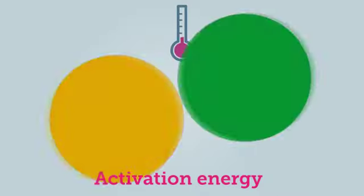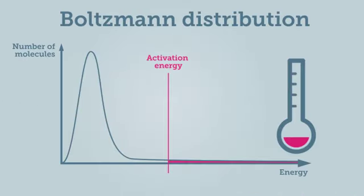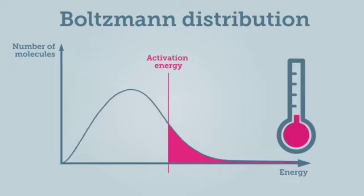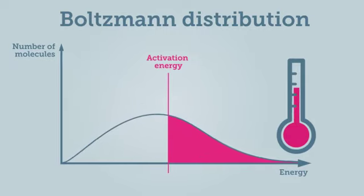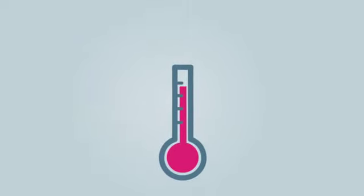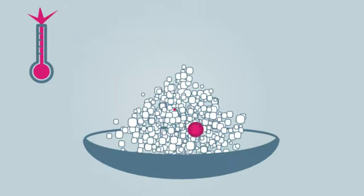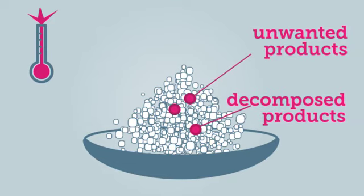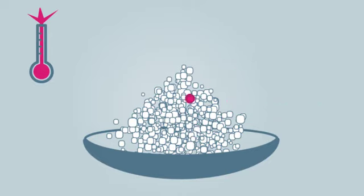Increasing the temperature increases the energy of the reactants. The effects of increasing temperature on energy can be seen from the Boltzmann distribution. As the temperature increases, more molecules have an energy greater than the activation energy. However, increasing the temperature too much can result in unwanted side reactions or damage to the products. This is particularly important in industrial-scale pharmaceutical production, where high purity is required.